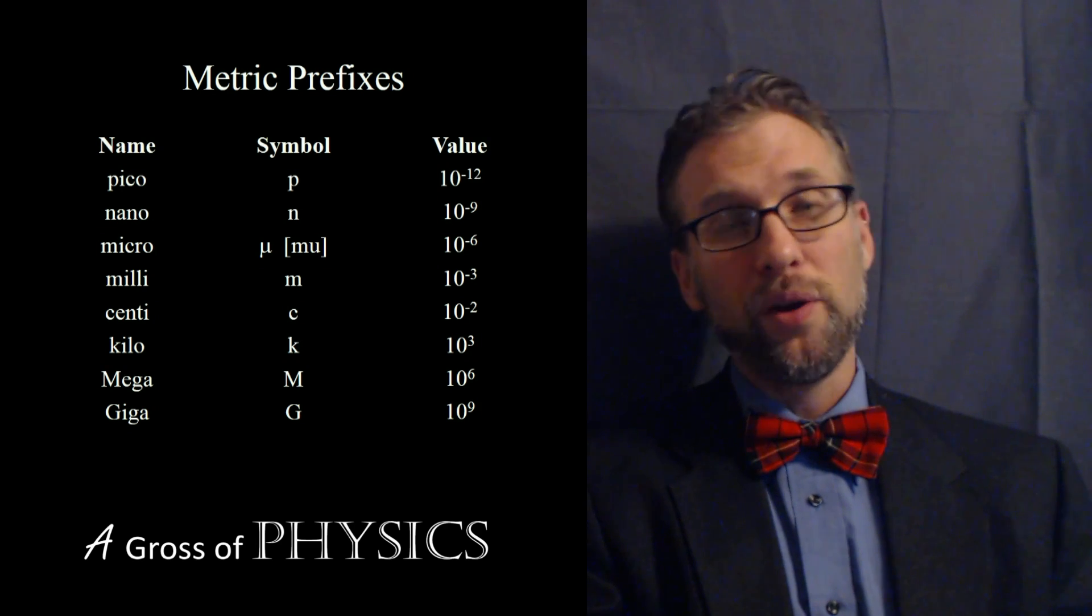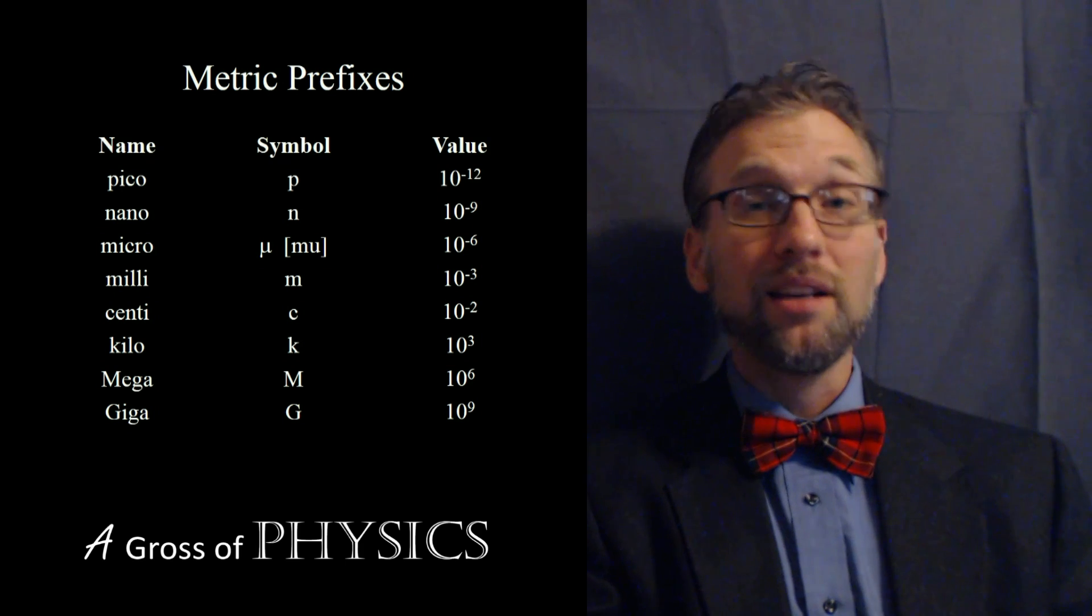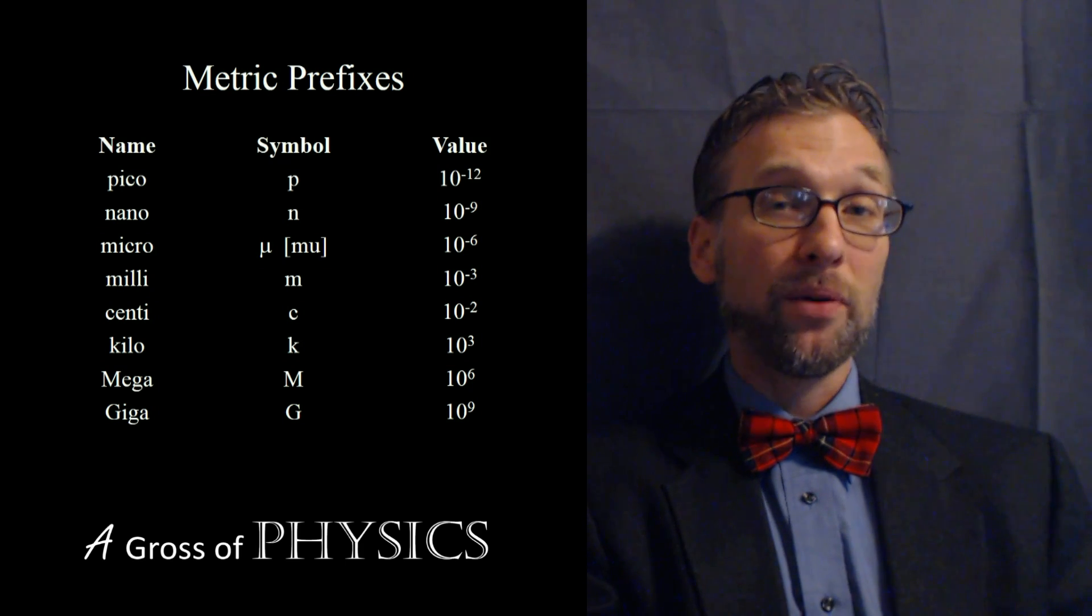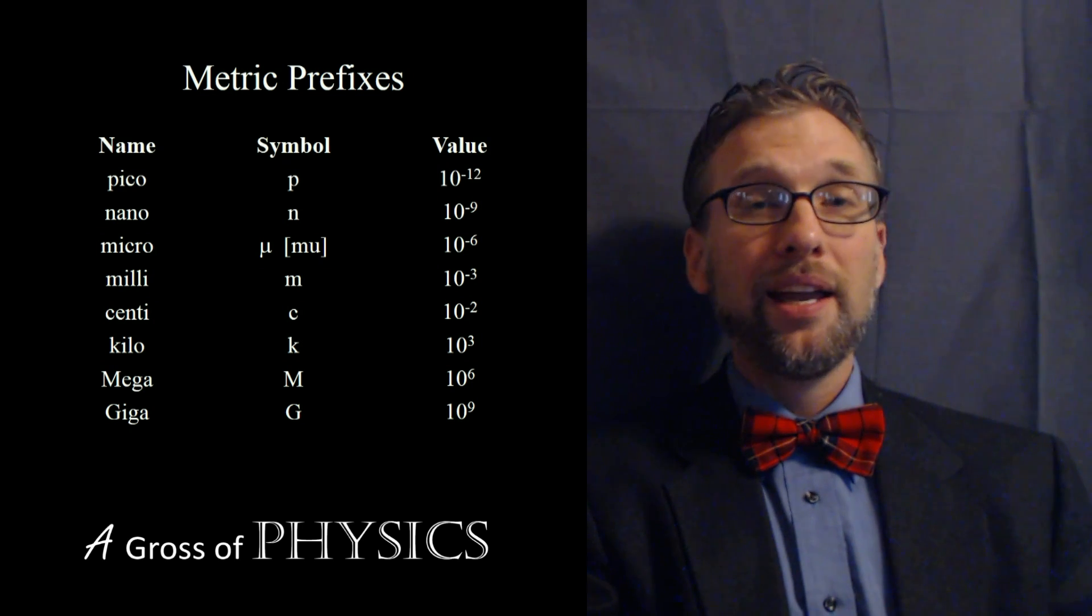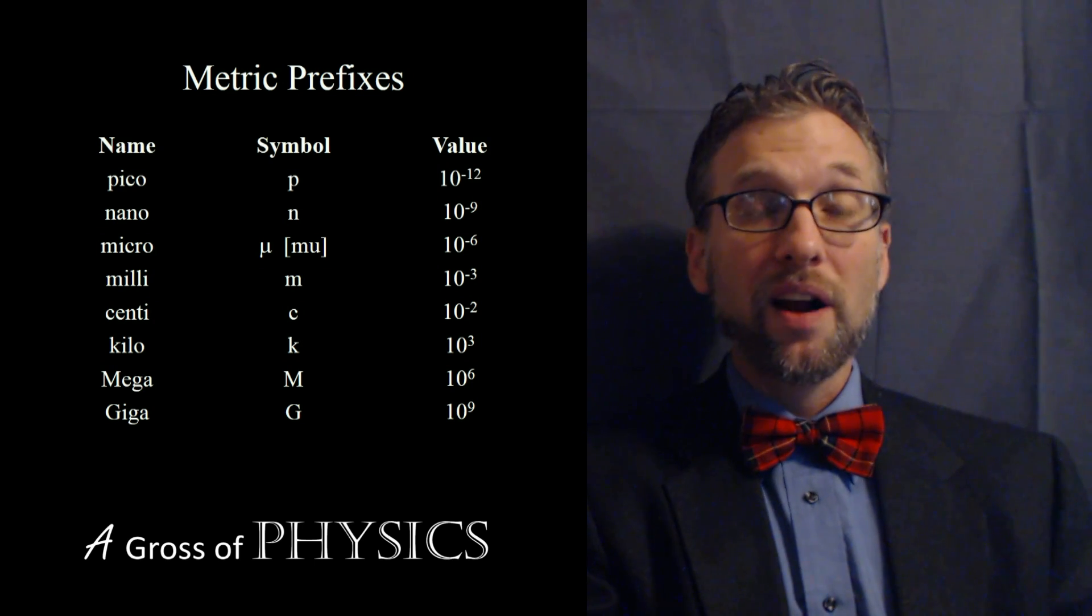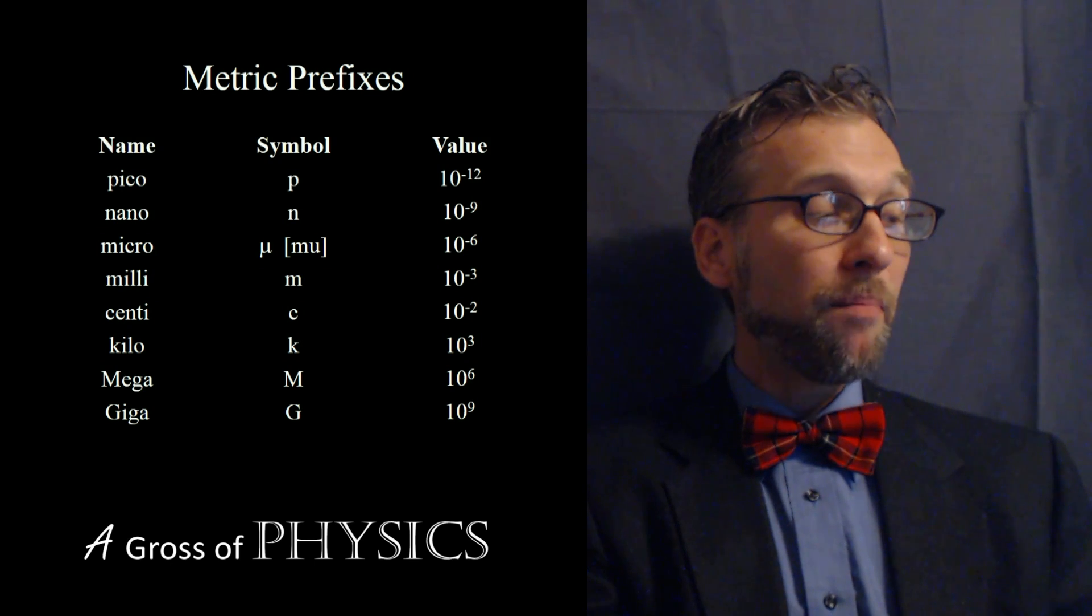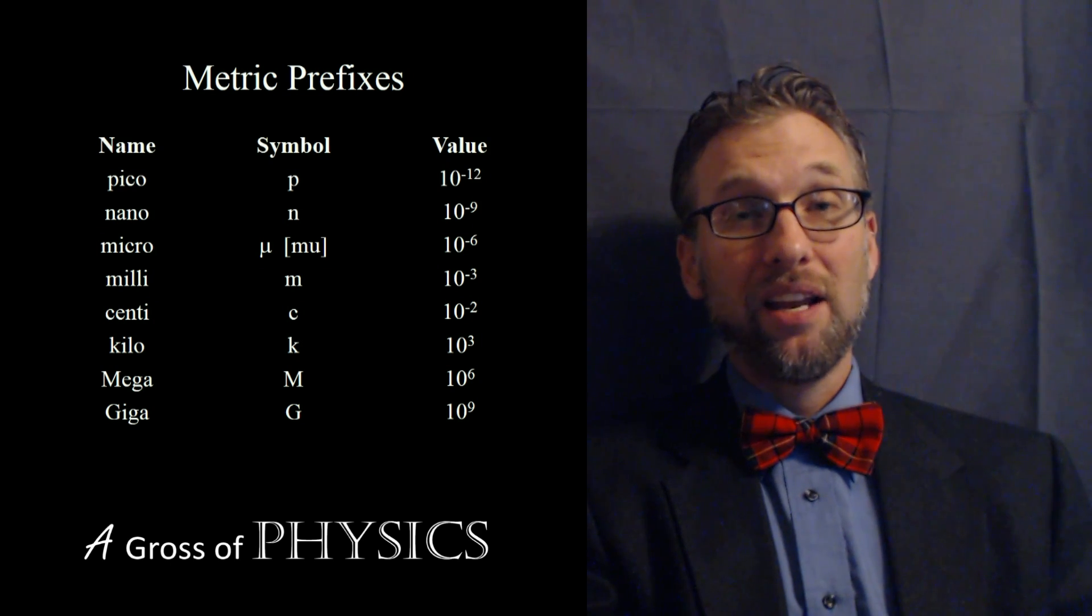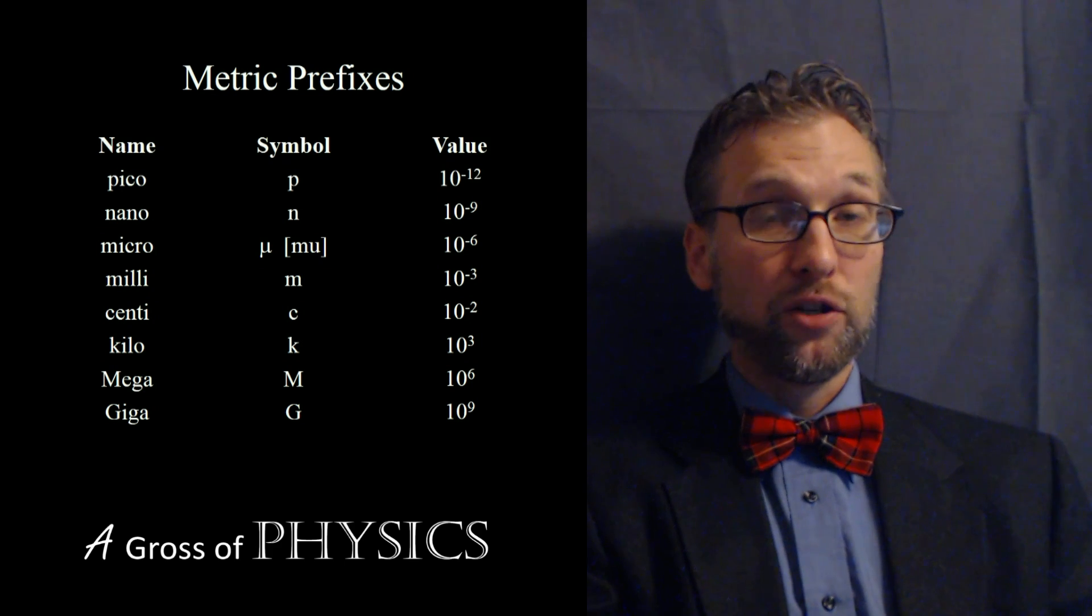You notice that pico and nano and milli and centi and even kilo are lowercase letters. Mega and giga are uppercase. Now there is one symbol that is not a basic letter in our alphabet. And that is a Greek letter mu. And that is the micro. So mu represents the micro. And that's 10 to the negative six. So that's the only one that is a Greek letter in this prefix chart.